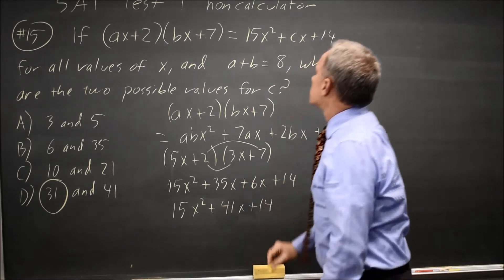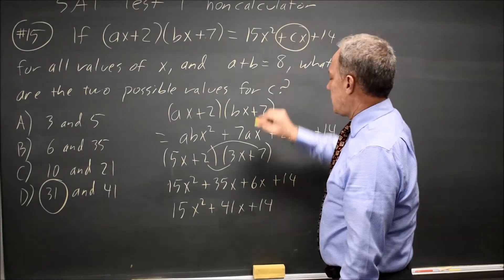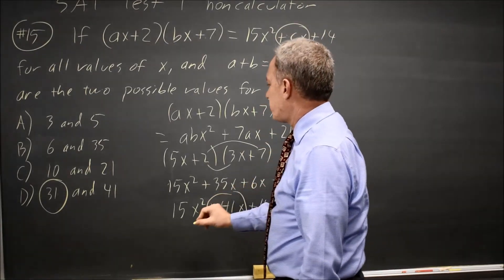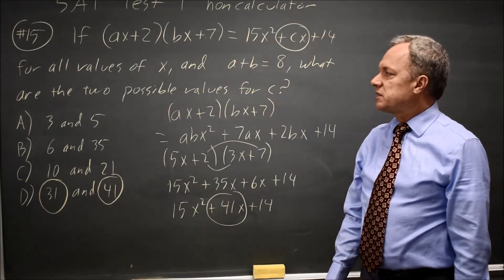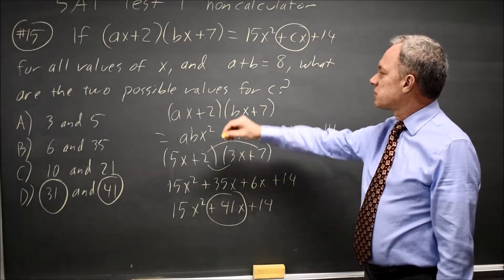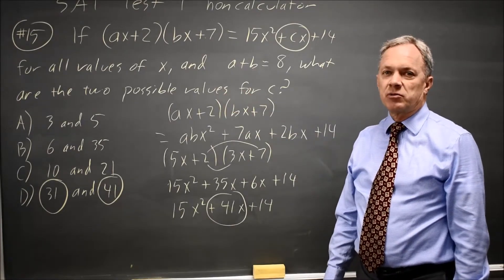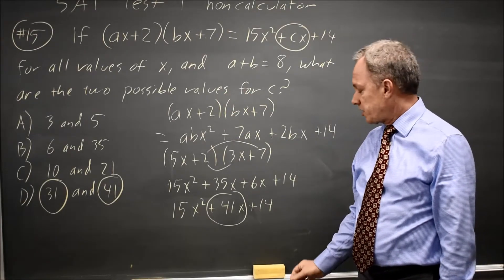The X coefficient they're asking for is C. The X coefficient we have is 41. That's the other choice in answer choice D. They said, what are the two possible values for C? We confirmed that 31 and 41 are the two possible values.